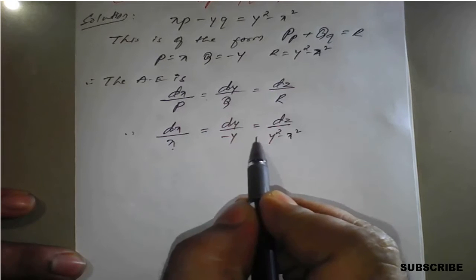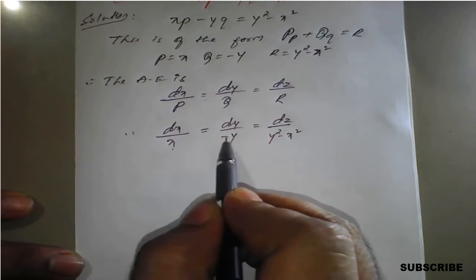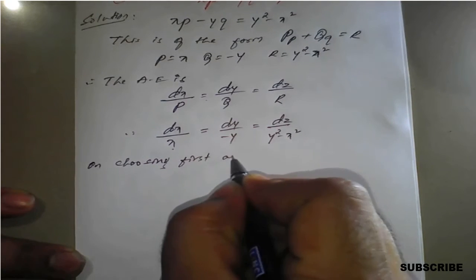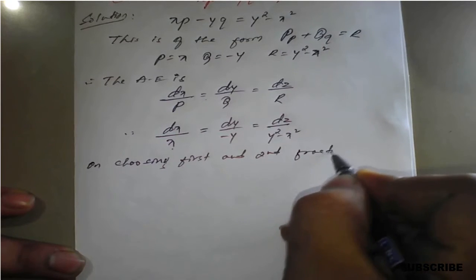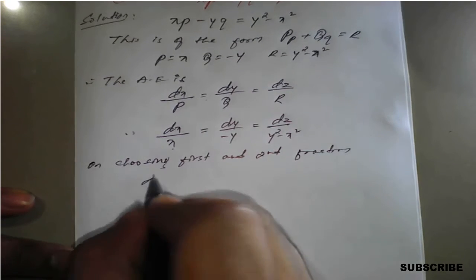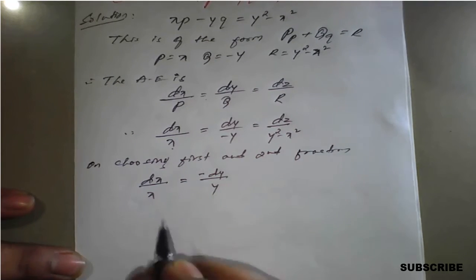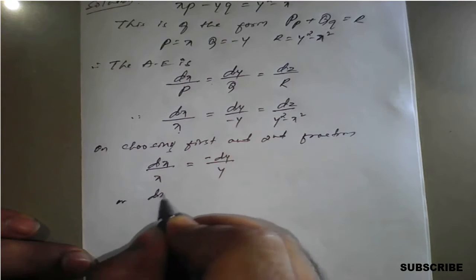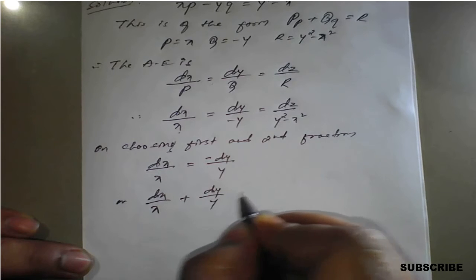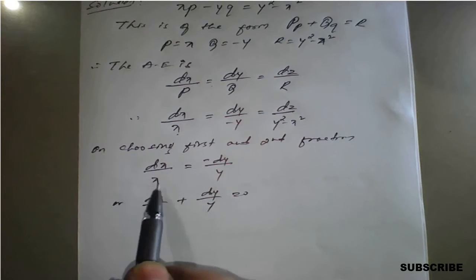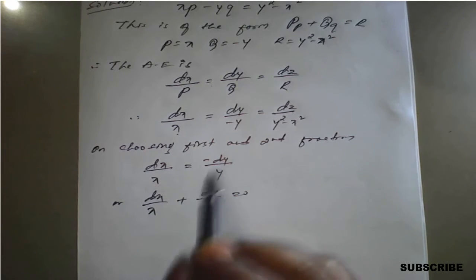Here, if we choose the first two fractions, it is easily integrable. On choosing the first and second fraction: dx/x and dy/(-y), we can write dx/x + dy/y = 0. No need to cross multiply here, because dx is already with variable x and dy is already with variable y, unlike previous examples.